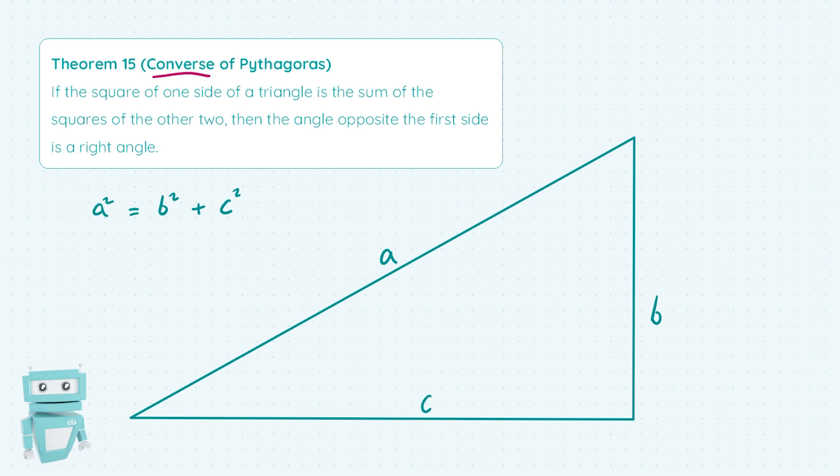So in this case we know that we have a triangle here with sides a, b, and c and we know that the length a squared is equal to the length b squared plus the length c squared.